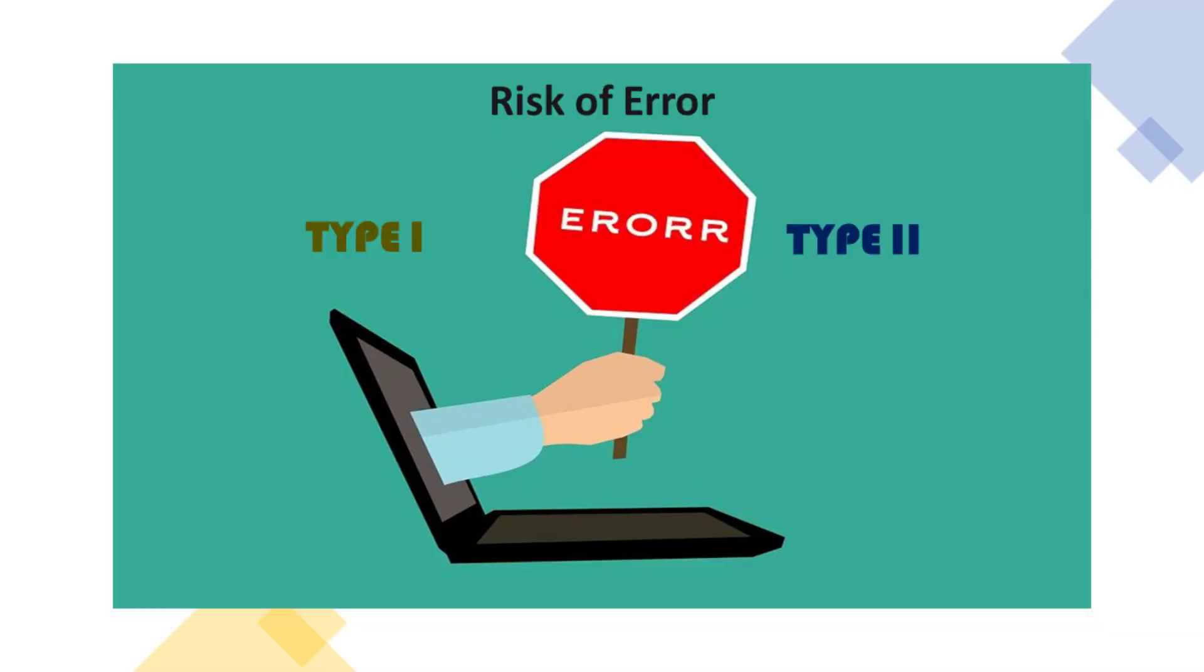The statistical inference process involves the use of a known sample statistic to arrive at a judgment about an unknown population parameter. Because we are relying on a sample, we expose ourselves to the risk that our conclusions about the population will be wrong. The risk of error is labeled as Type I and Type II error.